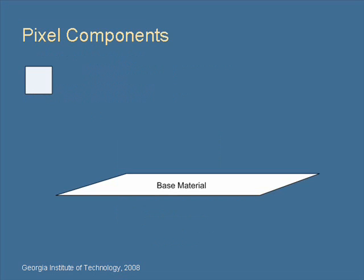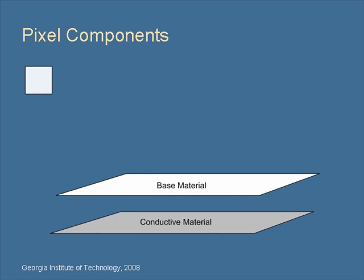The pixel starts with the base material such as fabric or paper. A conductive material is applied to the back to conduct heat and the thermochromic ink is applied to the front.